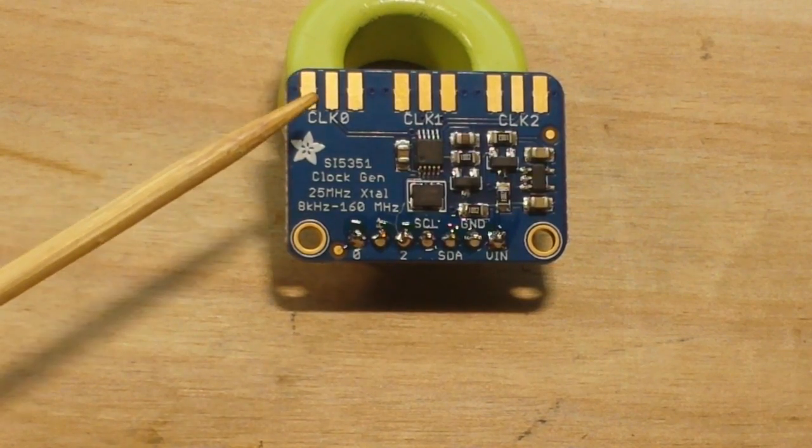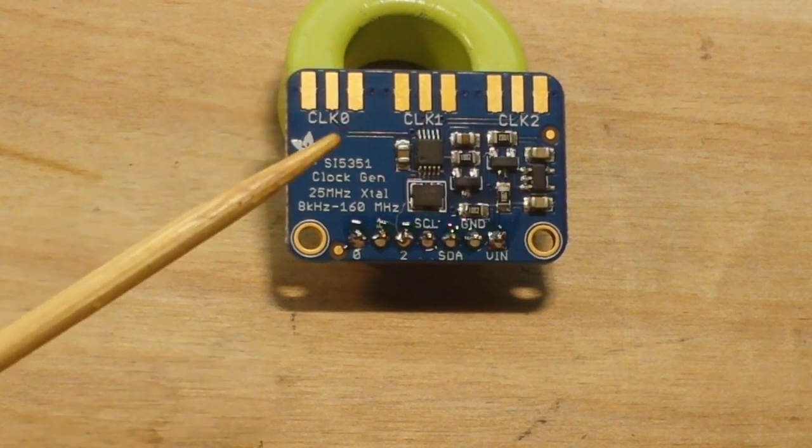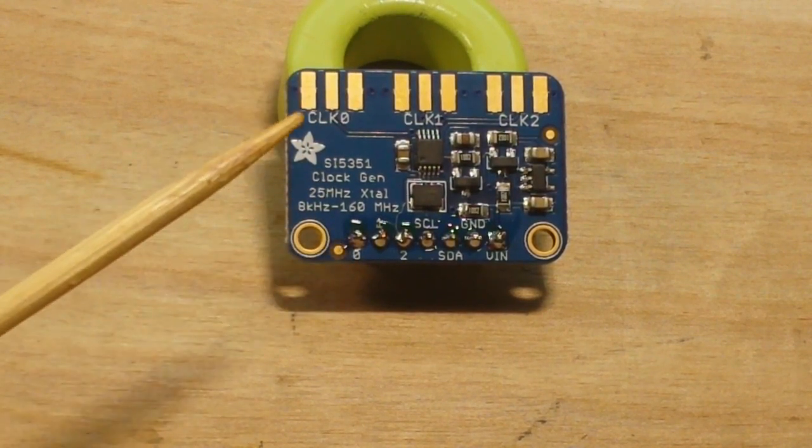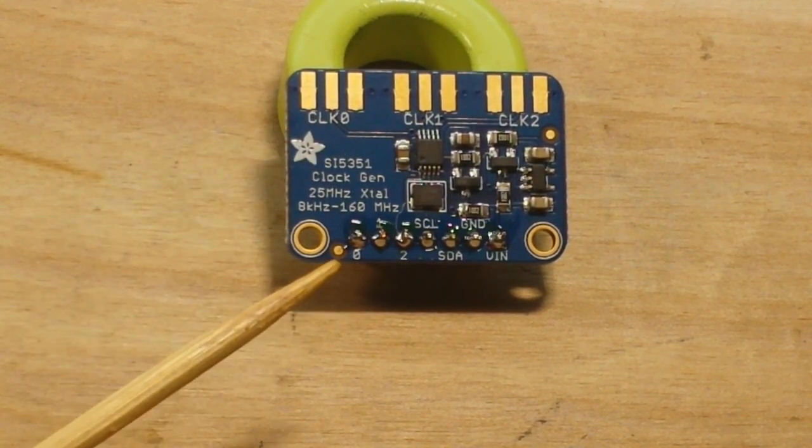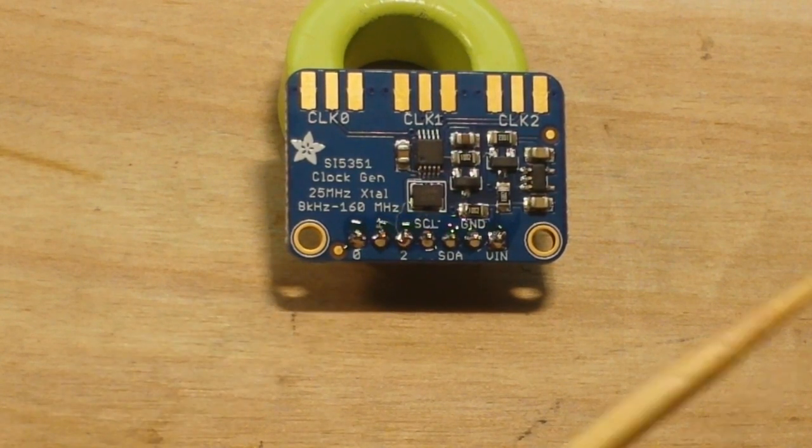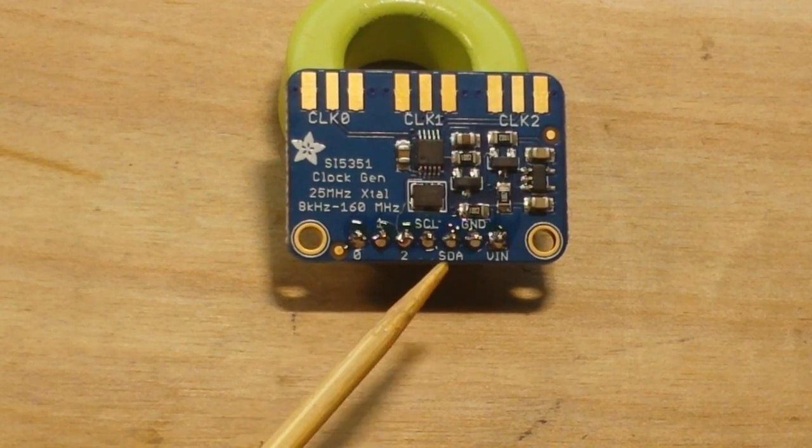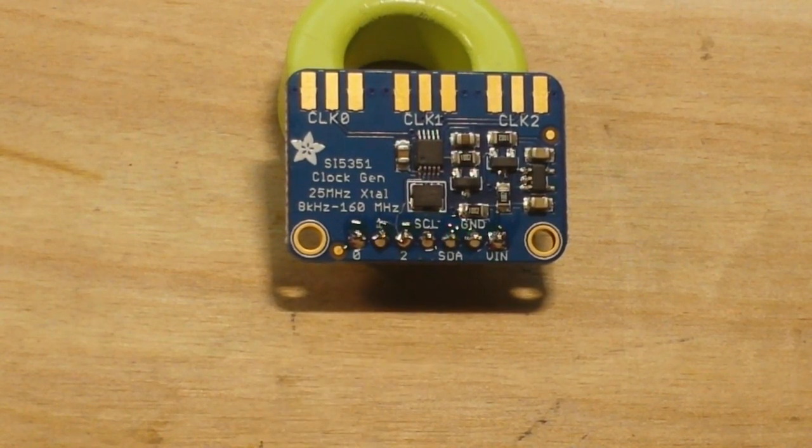Now these headers here are for an SMA connector you can solder on but if you're using it in circuit you see that one there it says clock zero there's zero one and two so you can just get them off of a header and use it on your breadboard and of course there is SCL and SDA so that means it's I squared C.